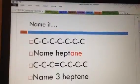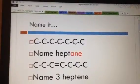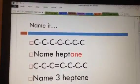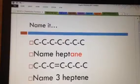So let's practice. 1, 2, 3, 4, 5, 6, 7 makes me hept. Single bonds makes me ane, heptane.